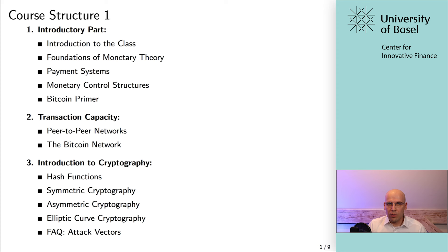In section two we look into the networking aspects. We talk about the concept of peer-to-peer networks and analyze how the Bitcoin network is set up and information exchanged. Section three is a little more math heavy. Here we lay the cryptographic foundations for what's to come. We look into the concept of hash functions and symmetric as well as asymmetric encryption, with a particular focus on elliptic curves, blocks, and the ECDSA.